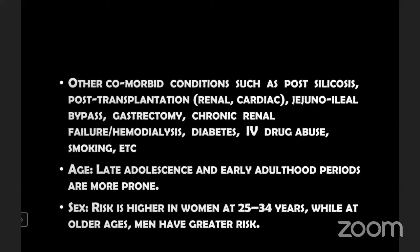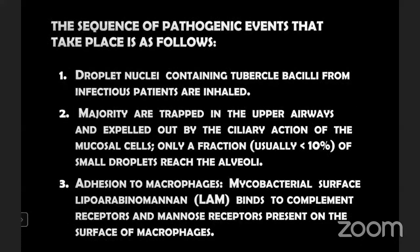Regarding age: mycobacterium tuberculosis occurs mostly in late adolescent and early adult period. It is more commonly seen in women at the age of 25 to 34 years, and also at older age. Men also have greater risk. The sequence of pathogenic events: droplet nuclei containing tuberculosis from infectious patients — the majority are trapped mainly in the upper airway and expelled by ciliary action of the mucosal cells; usually less than 10% of small droplets will reach the alveoli and cause infection.